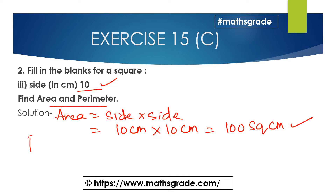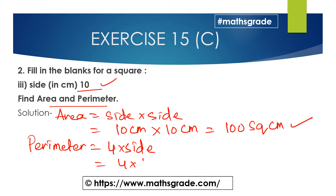Now the perimeter of the square. The formula is 4 multiplied by side. The side is 10 centimeters, so 4 × 10 = 40 centimeters. So the perimeter of the square is 40 centimeters and the area of the square is 100 square centimeters.